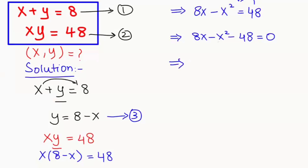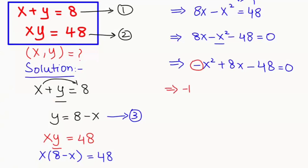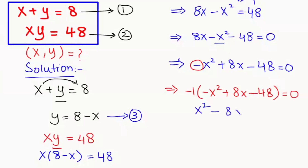Next I am going to rearrange it according to the power: minus x squared plus 8x minus 48 equals 0. Now here we have the negative signs, so I am going to multiply this whole expression by negative 1. This gives us x squared minus 8x plus 48 equals 0.